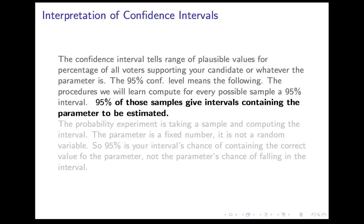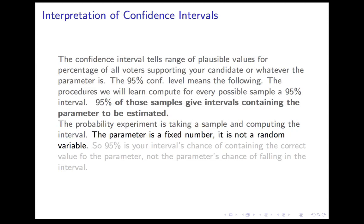The other confusing thing connected with that is that the interval is the thing that's varying, because that's what depends on the sample. So it's not the parameter's chance of falling inside the interval — it is the varying interval's chance of containing the parameter. To put it another way, the probability experiment you're doing is taking a sample and computing an interval. That process can be repeated with different outcomes each time. The outcome — the confidence interval — either contains the parameter or it doesn't, and there's a 95% chance that it will contain that parameter.